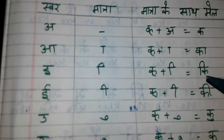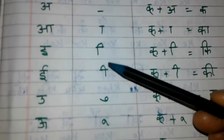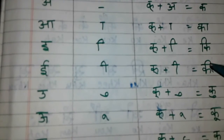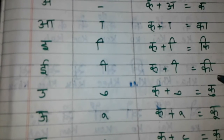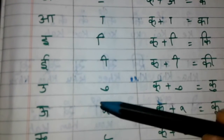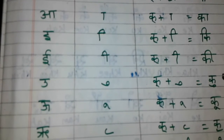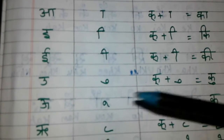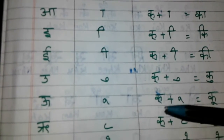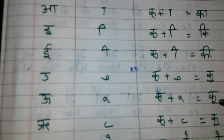Next, 'i' matra: k plus i matra = ki. Then 'u' matra: k plus u matra = ku. And 'uu' matra: k plus uu matra = kuu.